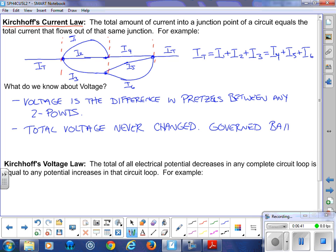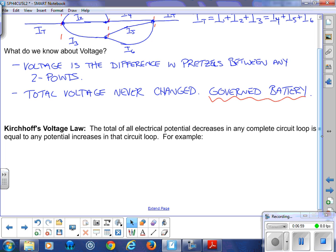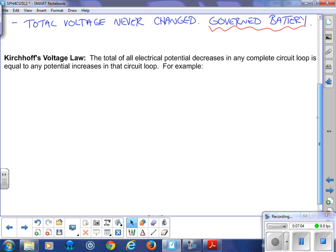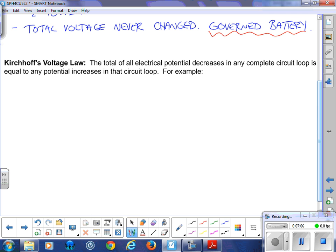If the battery only provides us with 6 volts, then that's all we have to distribute through our various circuits or various resistors throughout the circuit. So we are governed by that battery. Our voltage is finite. If you are given one pretzel at the start of the analogy, you had to eat it all and that's all you ever got. So you have one pretzel to distribute throughout.